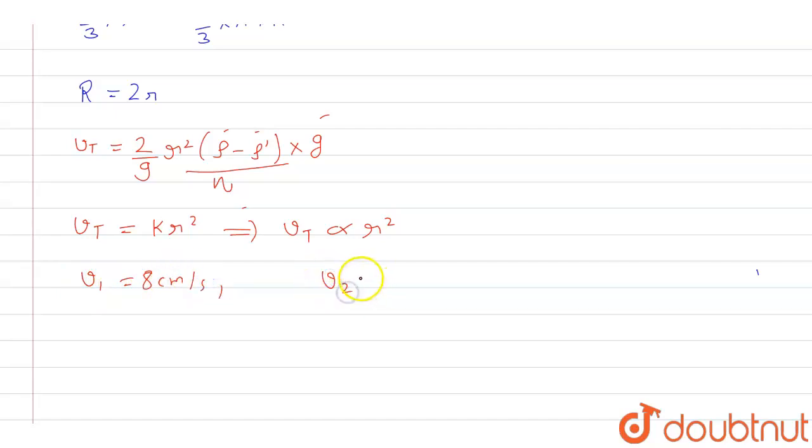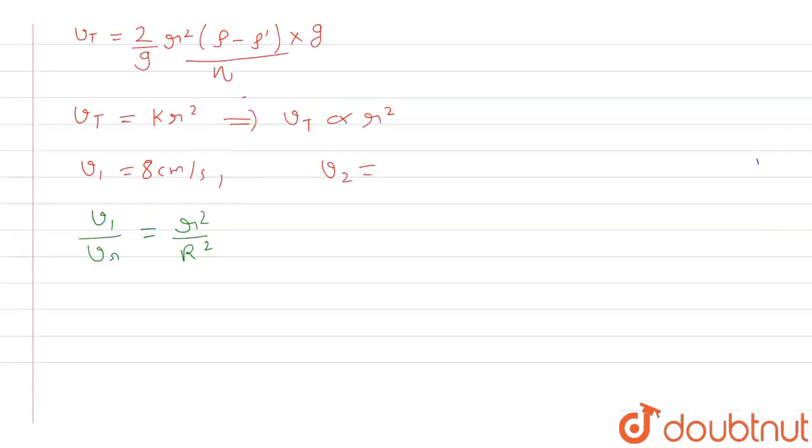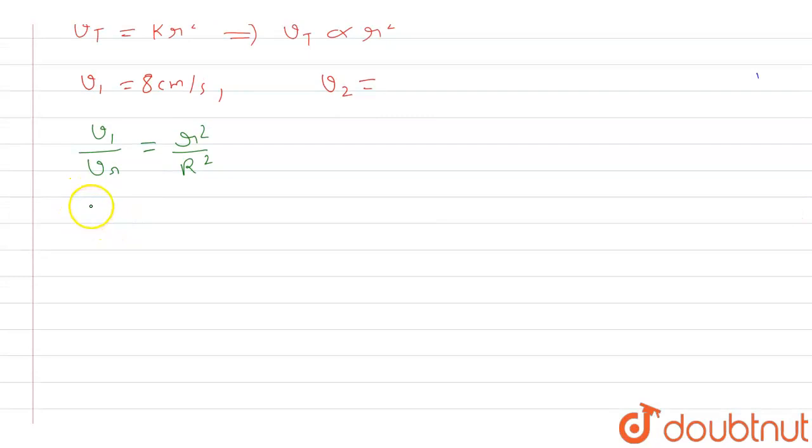And we have to calculate the terminal velocity of the bigger drop. So let's solve this now. With the above equation, we can say that v1 by v2 is equal to r squared by capital R squared. So further when we solve this, the value of v1 is given as 8.